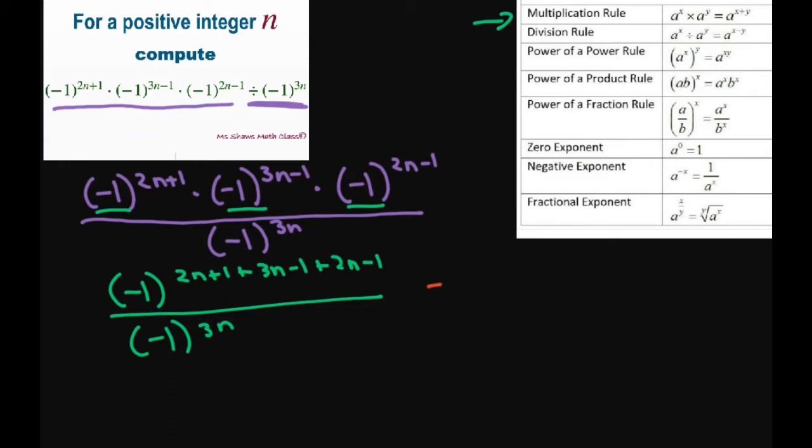In the numerator, we're just going to get (-1)^(7n-1) divided by (-1)^(3n).